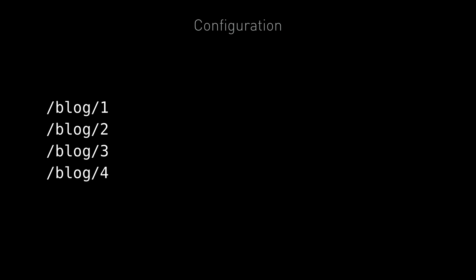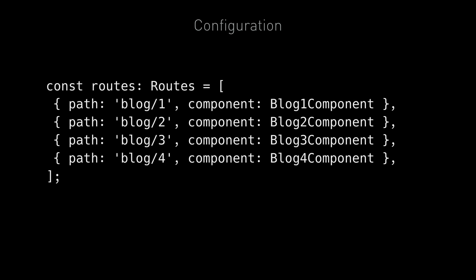We have slash blog slash one, slash two, slash three, and then slash four. Now we could write a route for each article like this. Each individual blog article would have its own component — blog one component, blog two component, blog three component, and blog four component.